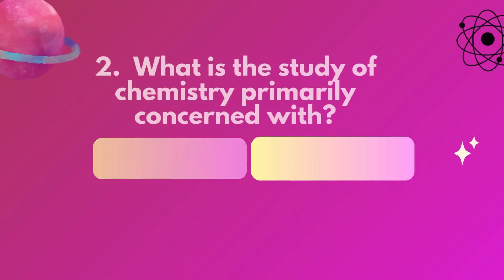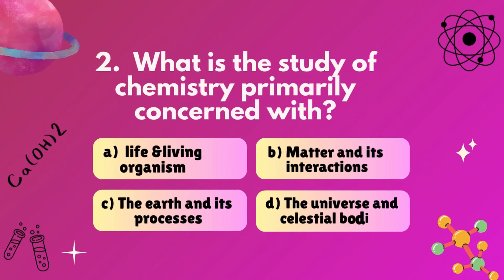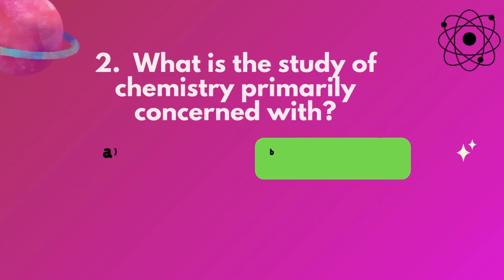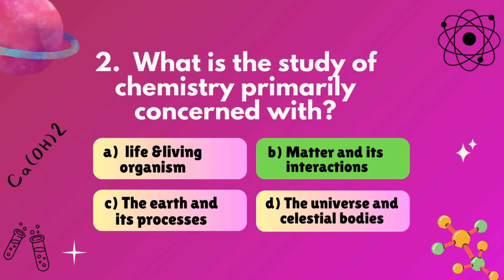Question 2: What is the study of chemistry primarily concerned with? A, living organisms. B, matter and its interactions. C, the earth and its processes. D, the universe and celestial bodies. Correct answer: B, matter and its interactions.